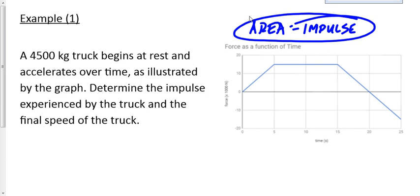Now let's read the question. A 4,500 kilogram truck begins at rest. The force over time is illustrated by the graph. Determine the impulse experienced by the truck, and what's the final speed? It's important to recognize whether it begins at rest or not — that won't affect the impulse, but it will affect the final speed. Regardless of what else we do, we start by finding area equals impulse.